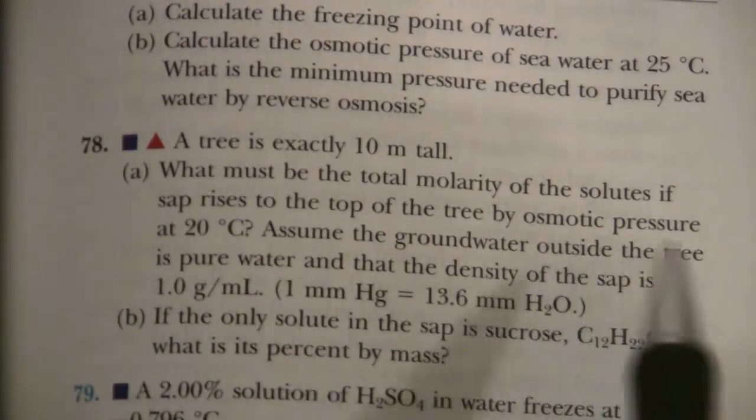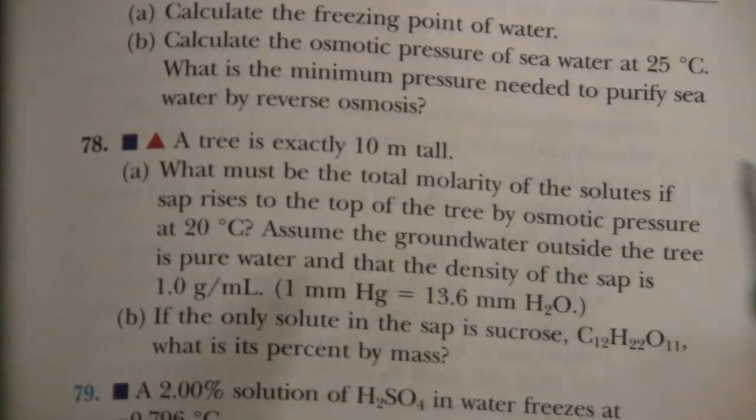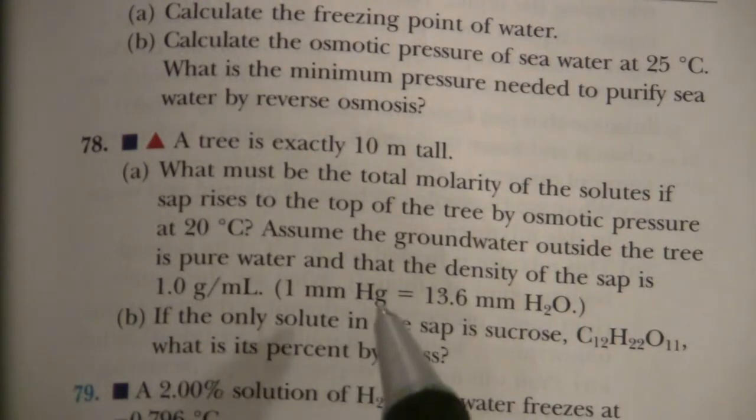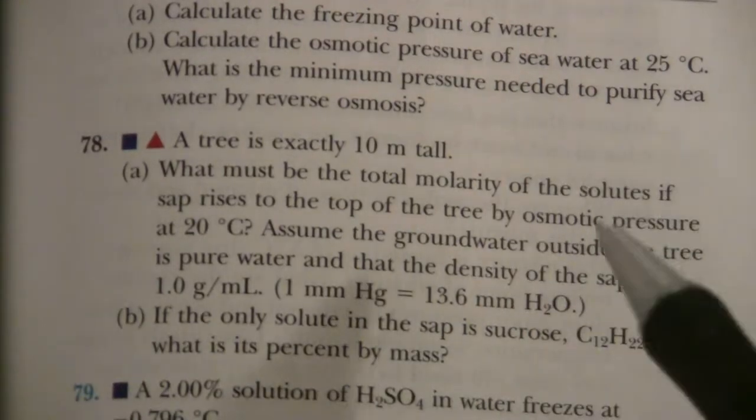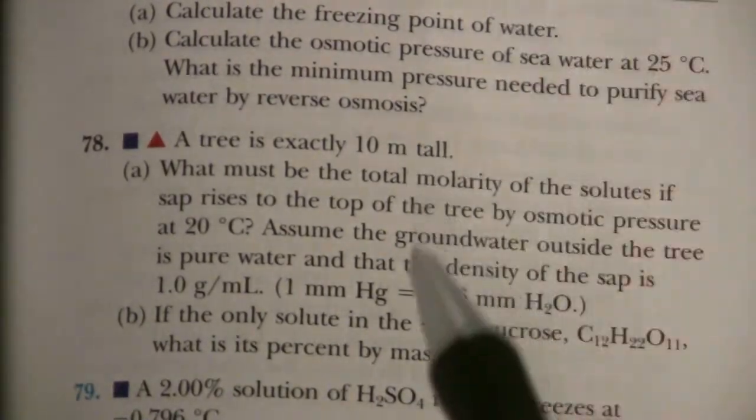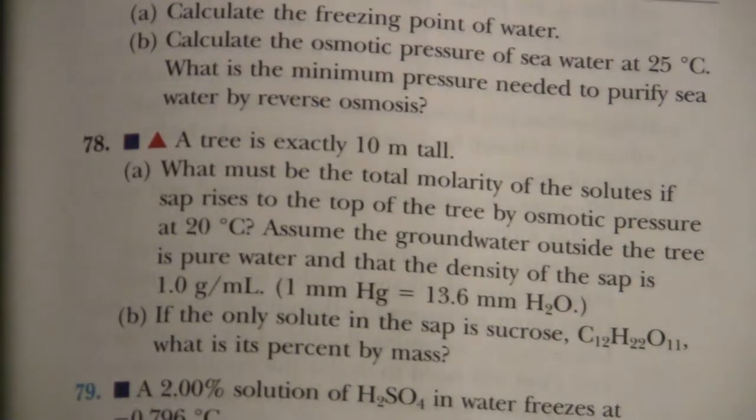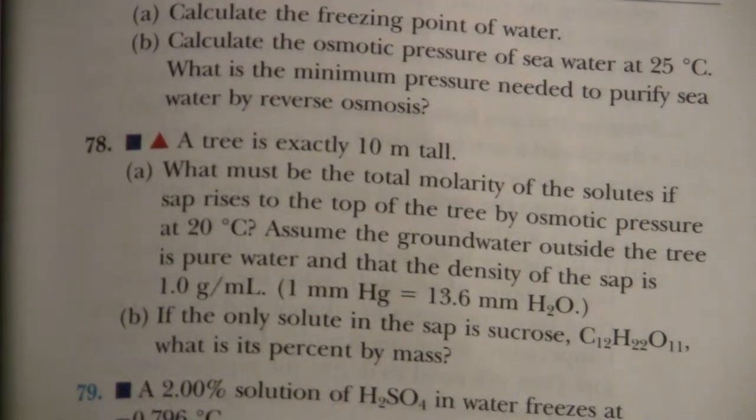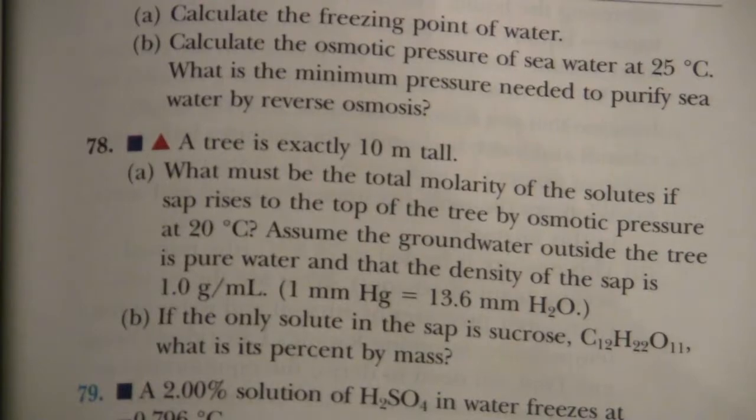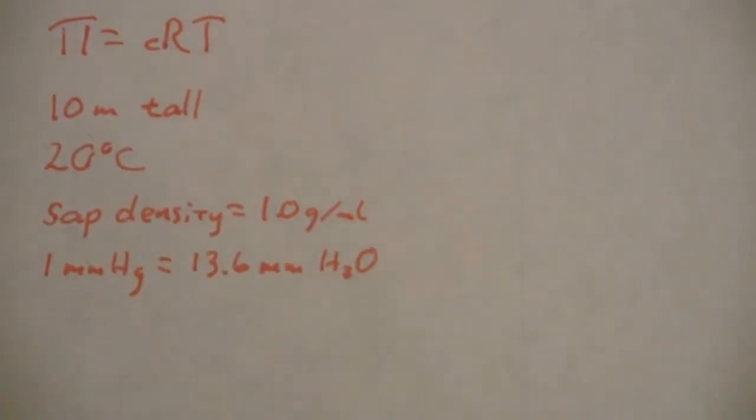When you measure something in millimeters of mercury, those are pressure units because it's a column of mercury. And the weight of that mercury is equivalent to the weight of the atmosphere pushing down on the mercury. So let me just illustrate this a little bit.